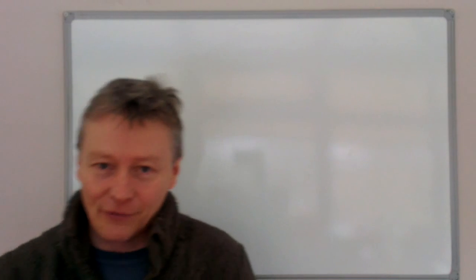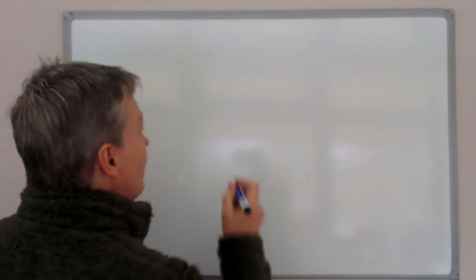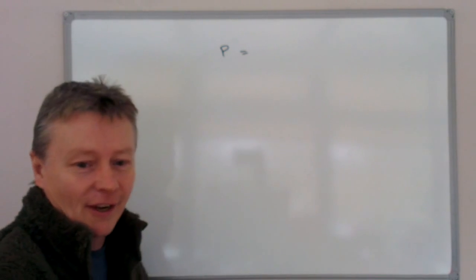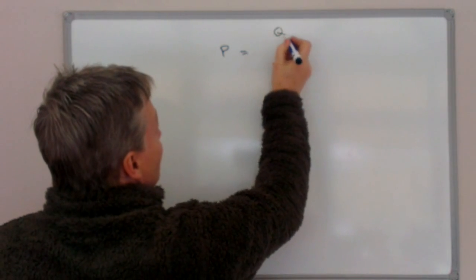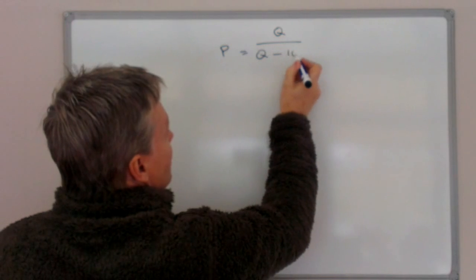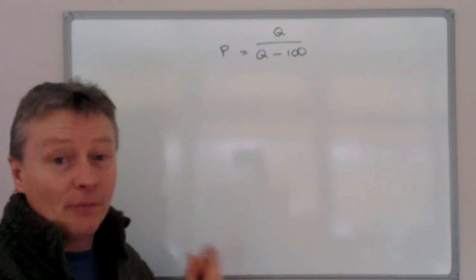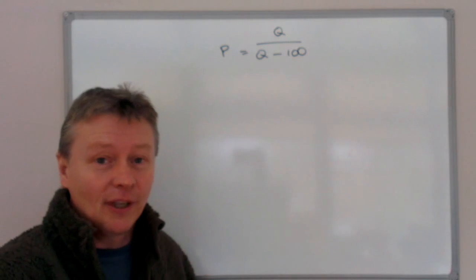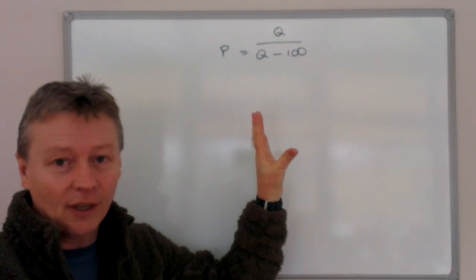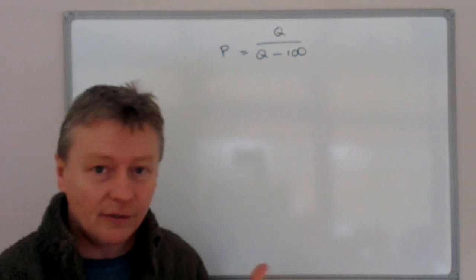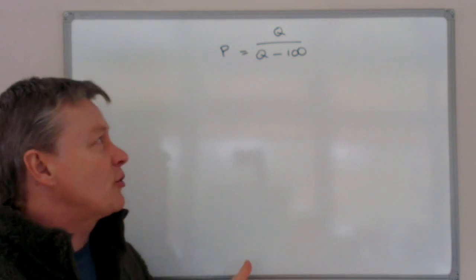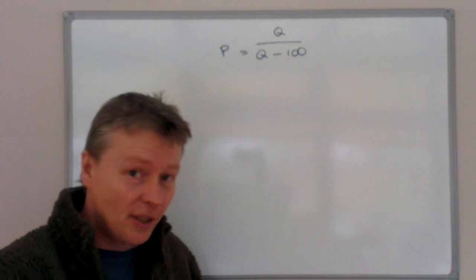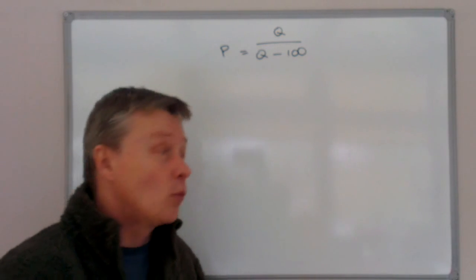So this is a higher level question and it's going to look something like this. So P equals Q divided by Q minus 100. Now at the moment, P is the subject of the formula. What we need to do is manipulate this formula in order to make Q the subject. So it's a little bit tricky because we've got a fraction, and we're going to need to use a little bit of factorization as well.